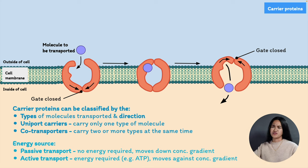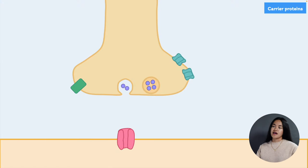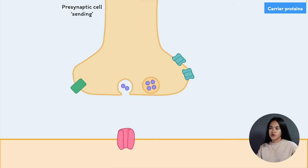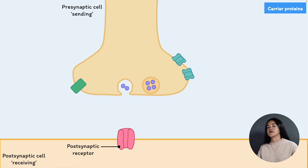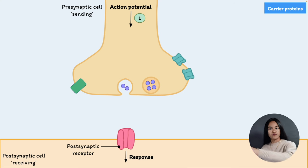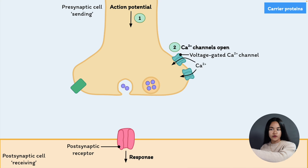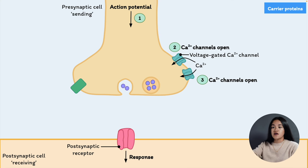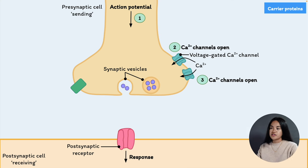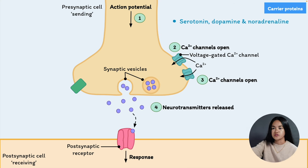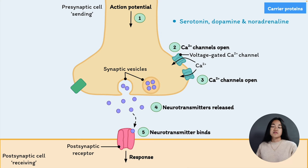Now let's look at how drugs can influence carrier proteins. We're still looking at neurotransmission — we have the presynaptic terminal and the postsynaptic cell with a postsynaptic receptor. When an action potential reaches the axon terminal, it stimulates voltage-gated calcium channels to open, and calcium ions flow into the synaptic knob where calcium triggers the release of neurotransmitters from synaptic vesicles — containing dopamine, serotonin, and noradrenaline. These neurotransmitters are released at the synapse where they interact with their receptors to produce a response. What we're focused on here is the reuptake process.